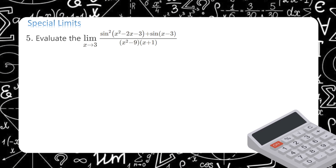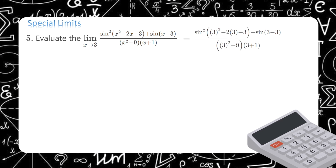Example 5: Evaluate the limit of (sin²(x² - 2x - 3) + sin(x - 3)) / ((x² - 9)(x + 1)) as x approaches 3. First, direct substitution with x = 3: (sin²(9 - 6 - 3) + sin(3 - 3)) / ((9 - 9)(4)) = 0/0, which is indeterminate.